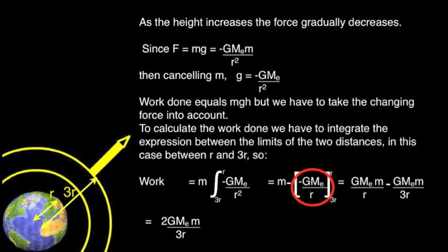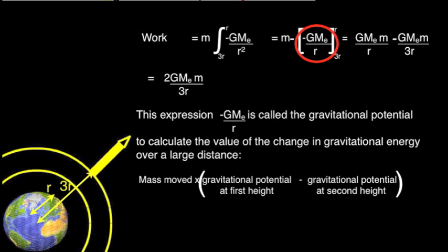The gravitational potential is the part of the equation which is ringed in red, minus GMe over r. We use this expression to calculate the energy change when the changes in height are large.